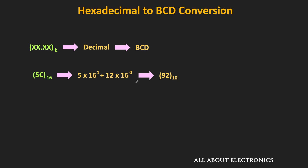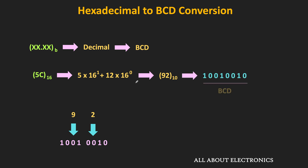So now let's perform the decimal to BCD conversion. Let's replace each decimal digit with the corresponding BCD code. Here, 9 can be replaced with 1001, while 2 can be replaced with 0010. So this is the BCD equivalent code of the hex number 5C. In this way, we can perform the hexadecimal to BCD conversion.